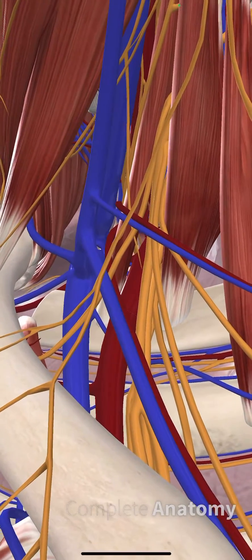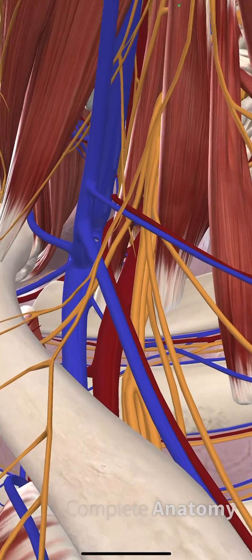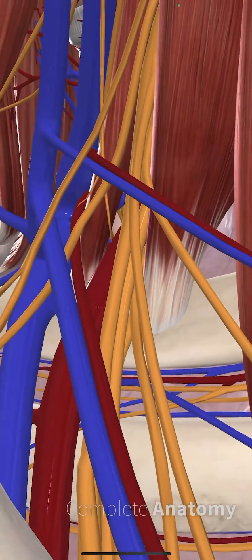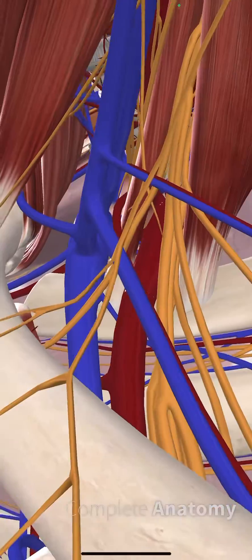And this is one of the potential pitfalls when you're performing an in-plane supraclavicular brachial plexus block. People sometimes misinterpret that tendon insertion onto the first rib as part of the brachial plexus. It's not.